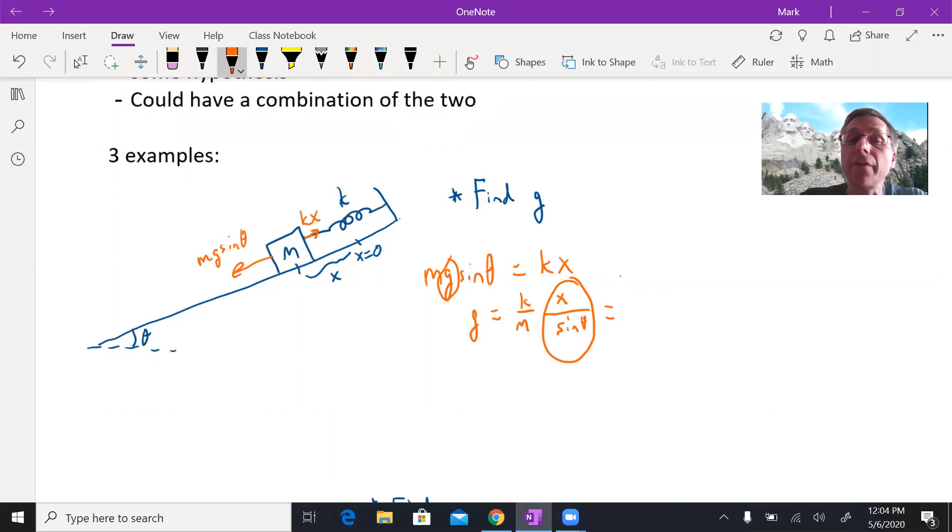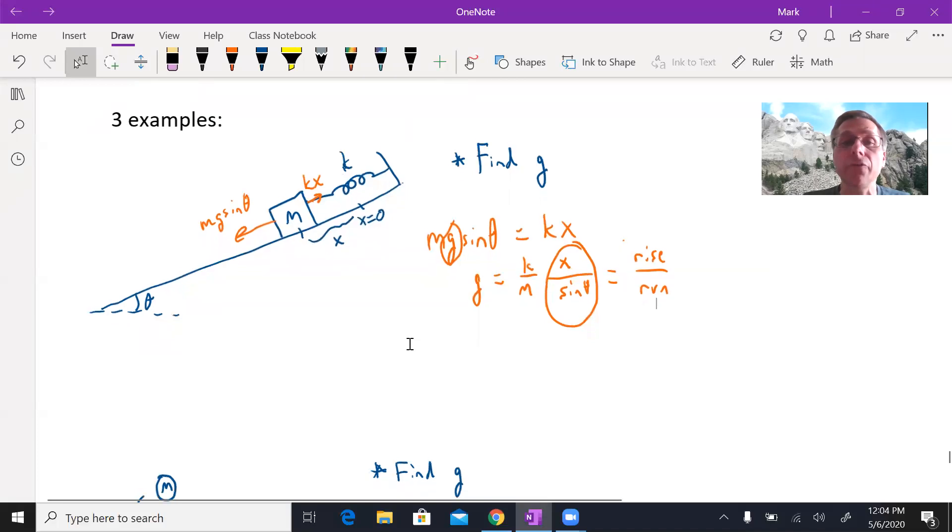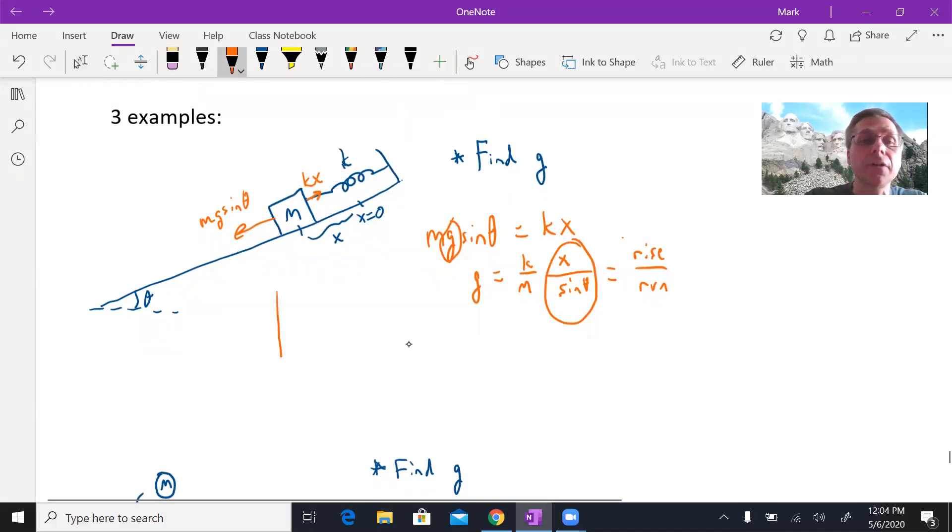If we need to make a graph for this, here's the trick. If we want to try to linearize a graph where the slope of that line is going to give us the result that we're after, think rise over run. That's going to tell you what the graph should look like. So my rise, the y-axis, what if we put the stretch distance of the spring on that axis? The run or x-axis, what if we put the sine of the angle of the hill down there?